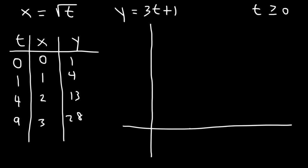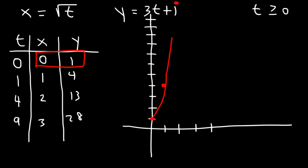The majority of the graph is in quadrant 1. Plotting (0, 1) as the y-intercept, then (1, 4), and (2, 13) as far as we can graph. The graph appears to be going in that direction, with t = 0, 1, and 2 at those respective points.